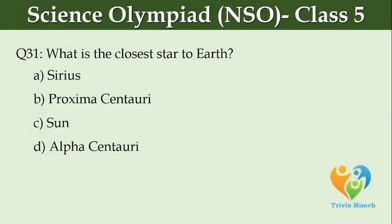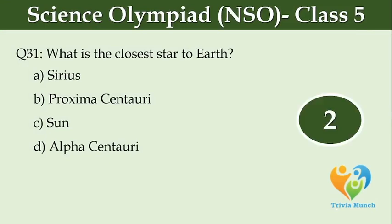What is the closest star to Earth? Option A: Sirius, Option B: Proxima Centauri, Option C: Sun, Option D: Alpha Centauri.